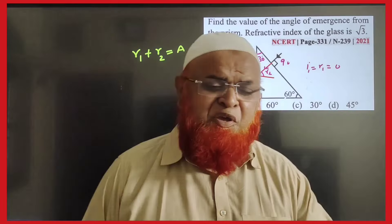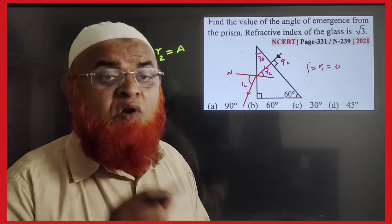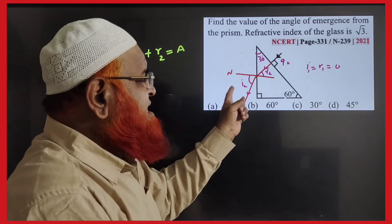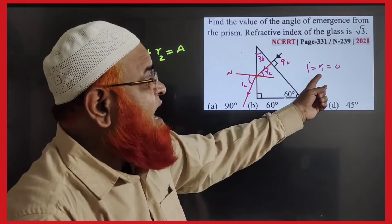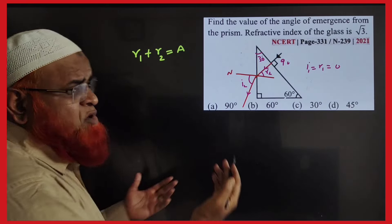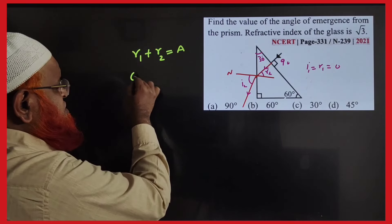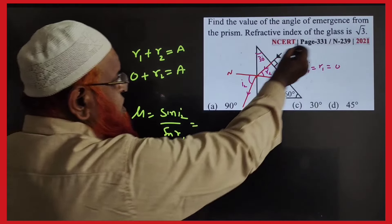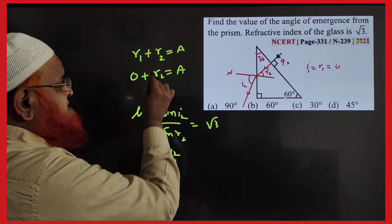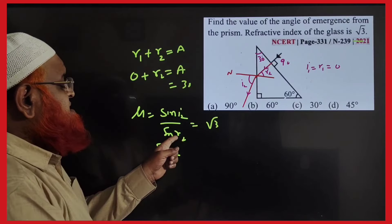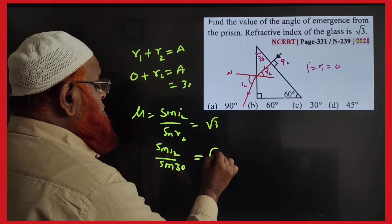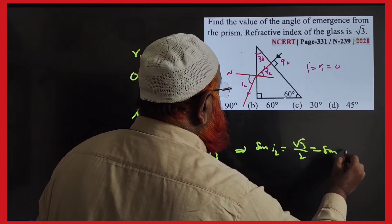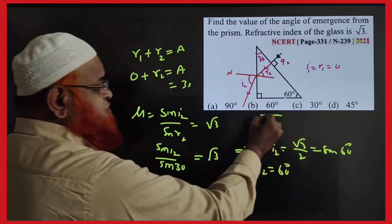For a right-angle prism where light enters perpendicularly through the hypotenuse: i1 = r1 = 0. Using r1 + r2 = A and r1 = 0, we get r2 = A = 30°. Then mu = sin(i2)/sin(r2) = √3, so sin(i2) = √3 × sin30° = √3/2 = sin60°. Therefore i2 = 60°.